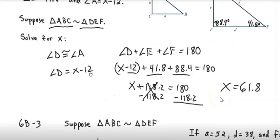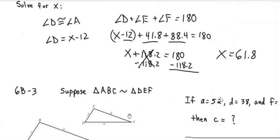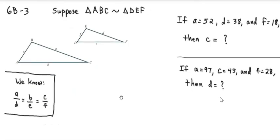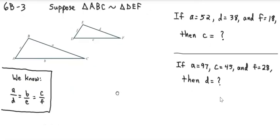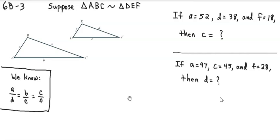Let's move on to the next section, which is 6B3. In 6B3, we're going to use what we know about similar triangles to answer some questions. We have some information here. It says suppose that triangle ABC is similar to triangle DEF. Here's triangle ABC, and here's triangle DEF. You can see that some sides are noted.